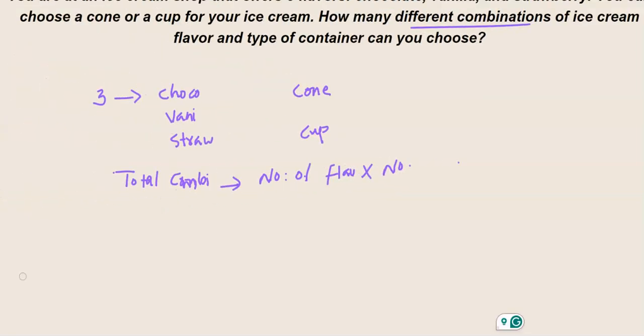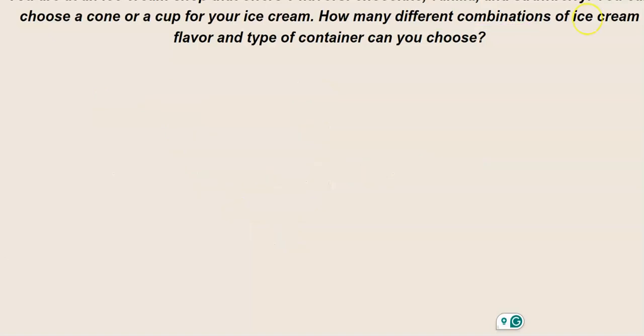The number of flavors is 3 and the number of containers is 2, so you have 3 times 2 equals 6 different combinations available. This is a very basic problem, and that's the reason I used it to start the explanation.